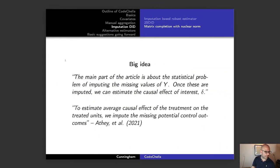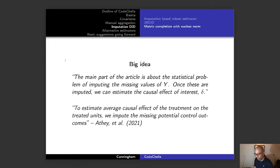The main point of the article is about the statistical problem of imputing the missing values of Y. Once these are imputed, we can estimate the causal effect of interest. To estimate the average causal effect of the treatment on the treated, we impute the missing potential control outcomes. It's really similar to the imputation-based robust estimator, but it doesn't use a parallel trends assumption — it's kind of an exotic estimator, really focused on synthetic control.